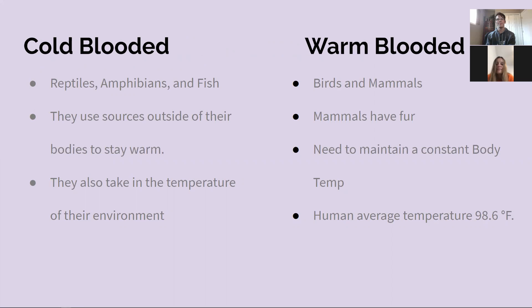Warm-blooded animals are birds and mammals. Mammals have fur and they need to maintain a constant body temperature. The human's average body temperature is 98.6 degrees.